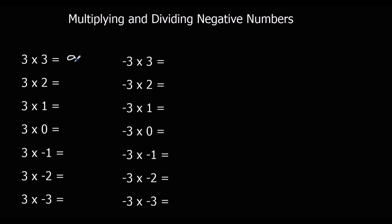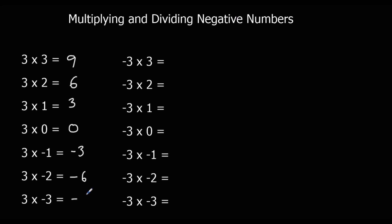3 times 2 is 6, 3 times 1 is 3, 3 times 0 is 0. You see they're going down. 3 lots of minus 1 is minus 3. 3 lots of minus 2 is minus 6, and 3 lots of minus 3 is minus 9.